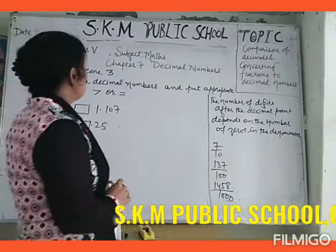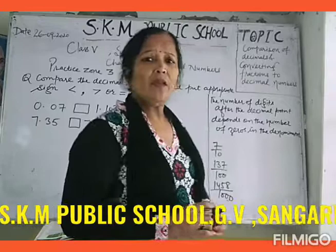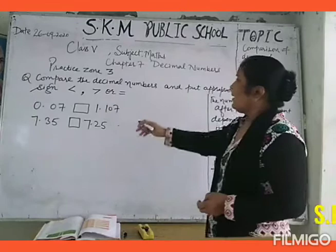First of all, whenever you are given two decimal numbers and you are asked to put an appropriate sign — greater than, less than, or equal to — I will show you how to do those types of sums. I am taking practice zone 3 today, one of the parts here.